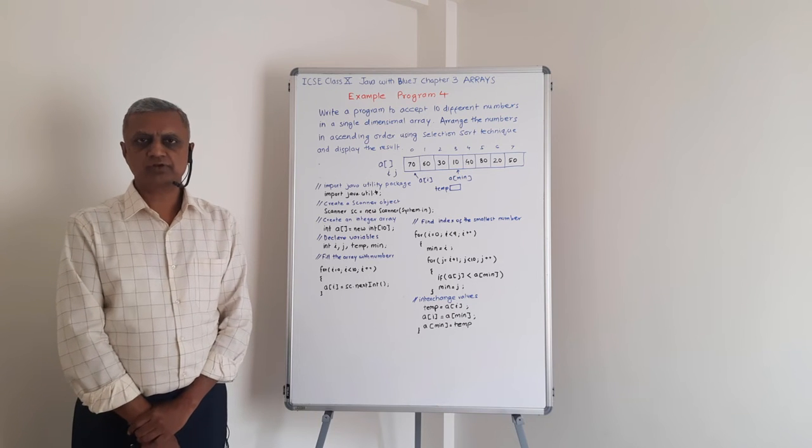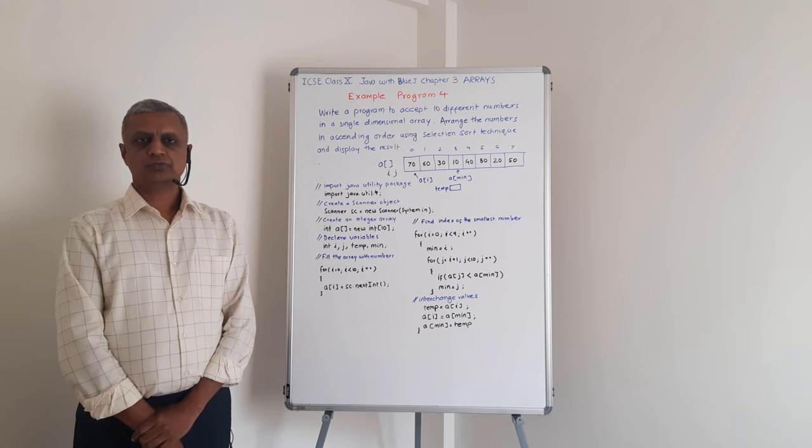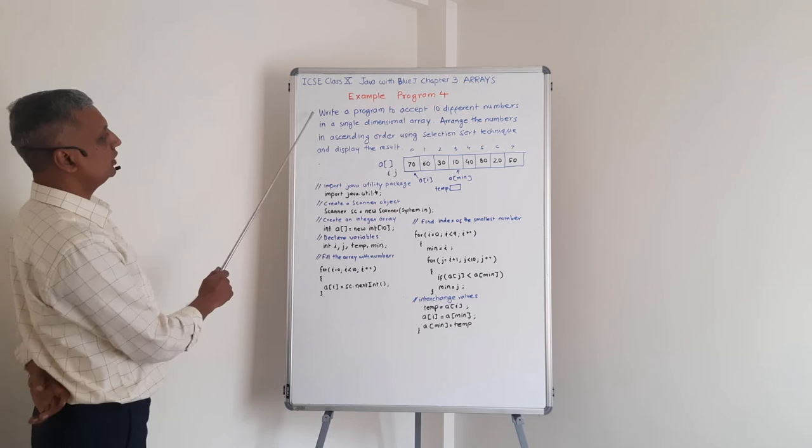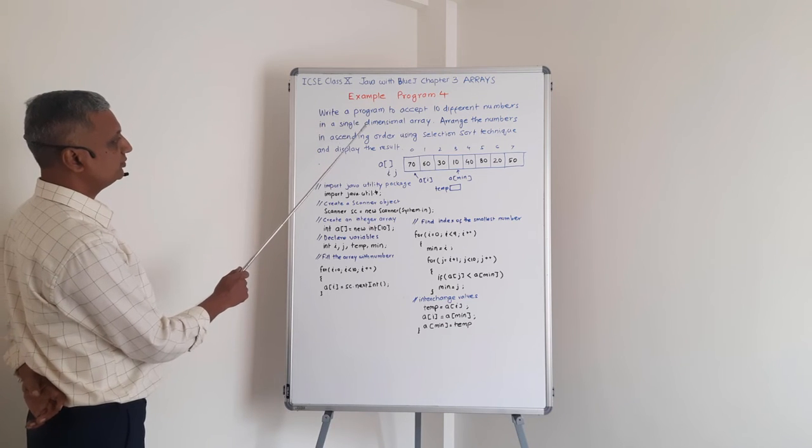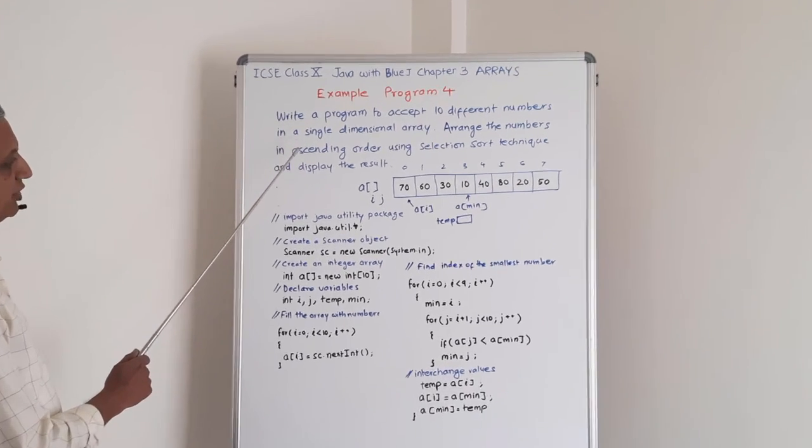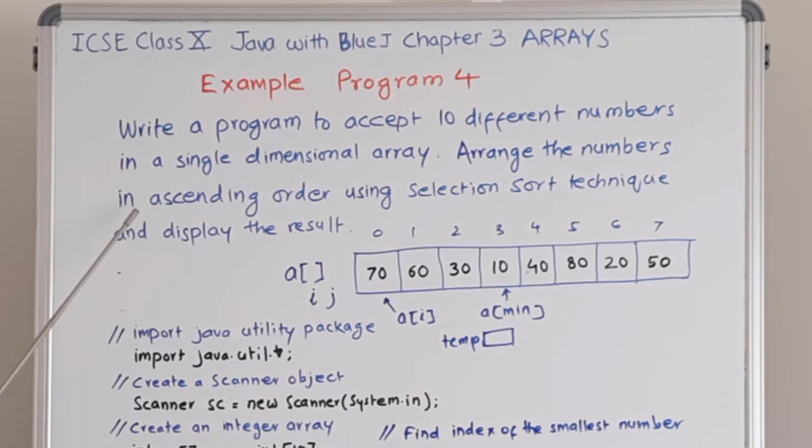Today we are going to see one more example program of arrays in Java. Write a program to accept 10 different numbers in a single dimensional array. Arrange the numbers in ascending order using selection sort technique and then display the result. What is the selection sort technique?